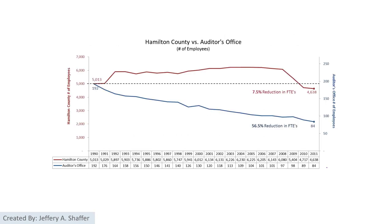Going back to our visualization, in this case we did see that the blue team did a great job over the past 20 years. But how can we use the same data to tell a story that is good for the red team?